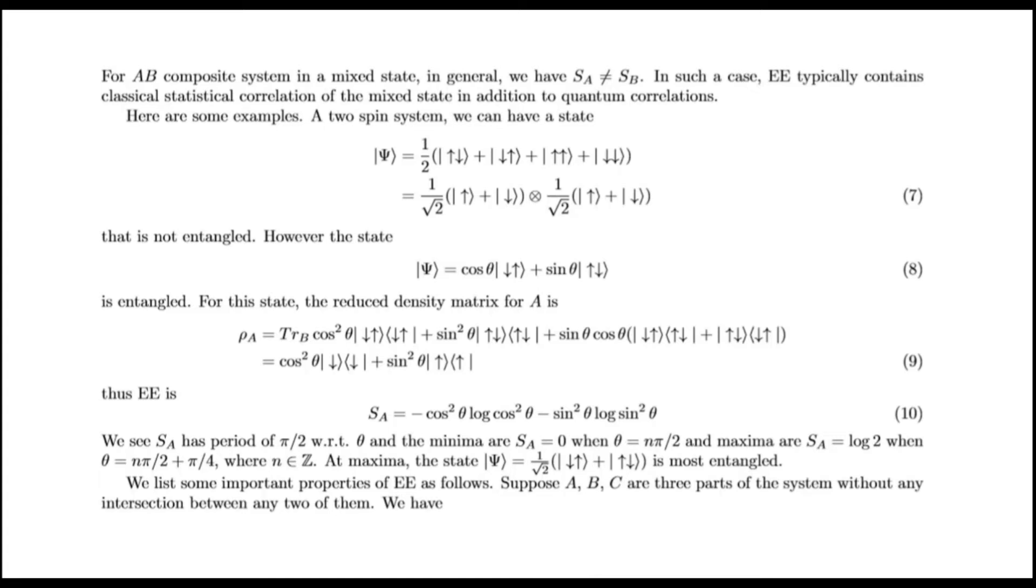A two-spin system. You can have a state that is not entangled. However, this state is entangled. For this state, the reduced density matrix for A is this, which shows entanglement entropy to be this. We see SA has period of π/2.